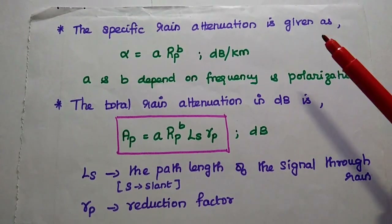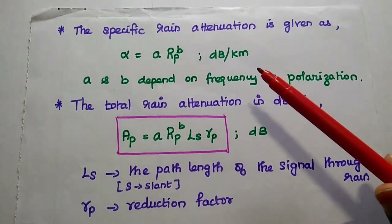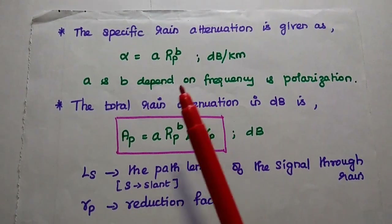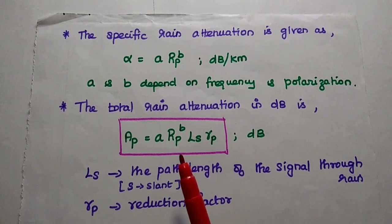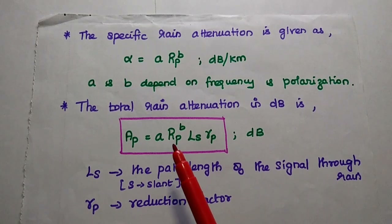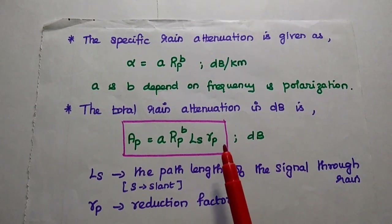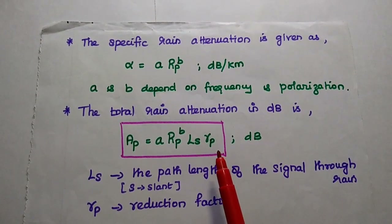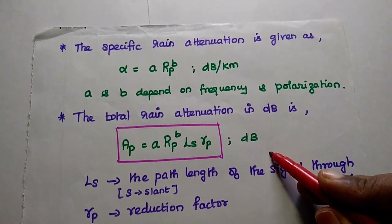The specific rain attenuation is given as alpha = A × RP^B, with units of dB per kilometer. Here the attenuation depends on the rain rate, and A and B are parameters which depend on frequency and polarization. The total rain attenuation in dB is given as AP = A × RP^B × Ls(RP), where Ls is the slant path length of the signal through rain and the small rp represents the reduction factor of the signal strength.